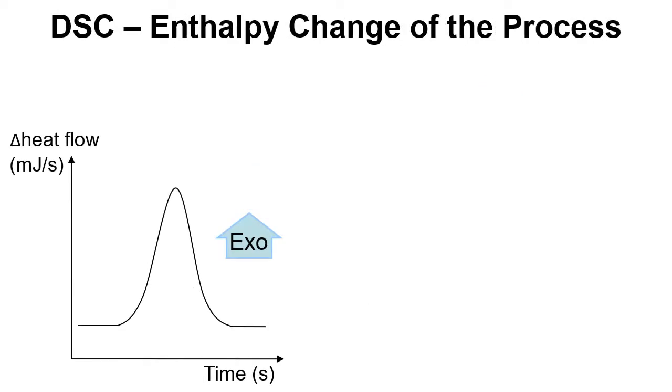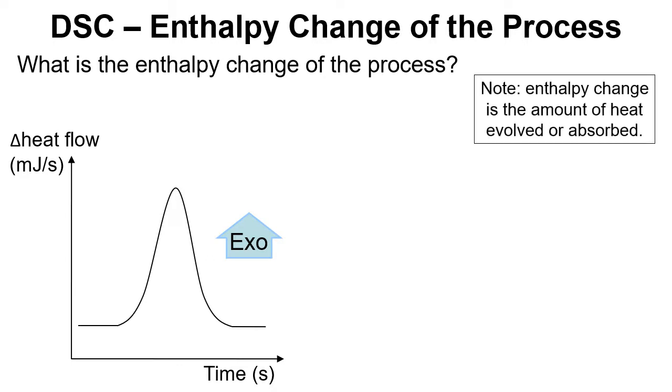In terms of enthalpy change of a process, if we just take a look at heat flow, difference in heat flow versus time, and ask the question what is the enthalpy change associated with this process? Just note enthalpy change is the amount of heat that's evolved or absorbed in the process. If we draw in a line across here and fill that in, if we work out the area that's been filled in with blue, that will tell us the enthalpy associated with that thermal process.